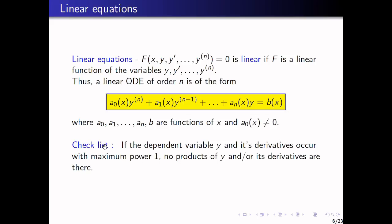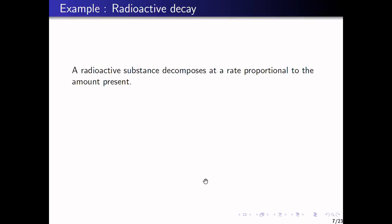To summarize the checklist: the dependent variable and its derivatives must occur with maximum power 1, and no product of y or its derivatives is allowed — for example, there should be no term like y^(n) times y^(m). Such products are not permitted in a linear ODE. We will now see some examples of ODEs.